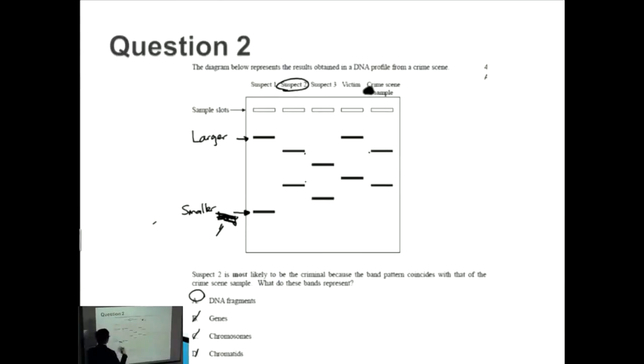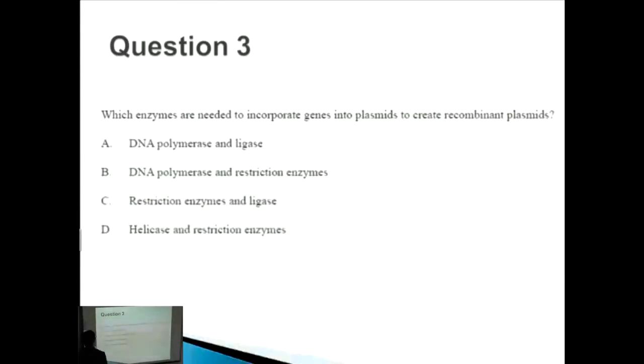Let's look at question three: which enzymes are needed to incorporate genes into plasmids to create recombinant plasmids? Remember that a plasmid is like a circular DNA. If we cut this plasmid, we can insert an extra gene into it. Let's make this gene in green and black. If you cut that open and insert it, you end up getting something like this.